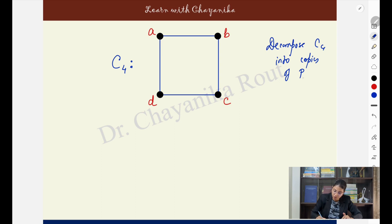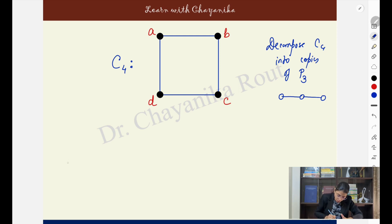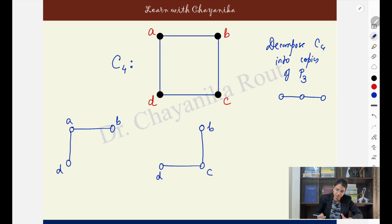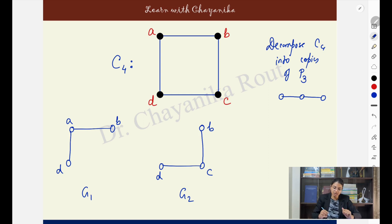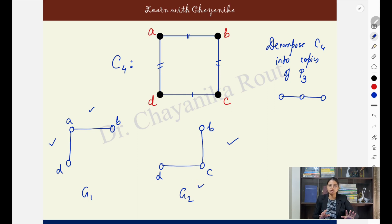Now if I ask to decompose C4 into copies of P3 — a path on three vertices — I can take B, A, D as the first copy and B, C, D as the second. G1 is a P3 and G2 is also a P3. Have I covered all the edges? Yes — AB, AD, BC, and CD are all covered, each appearing exactly once. So every subgraph is a copy of P3 and my target is accomplished.